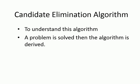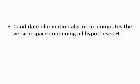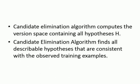The Candidate Elimination Algorithm computes the version space containing all hypotheses. It finds all describable hypotheses that are consistent with the observed training examples. The algorithm accepts only consistent hypotheses from the training examples, so it looks for consistent hypotheses.